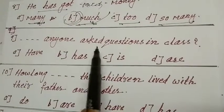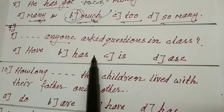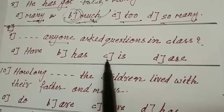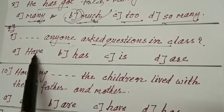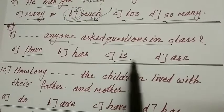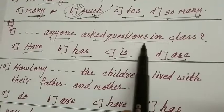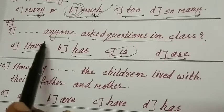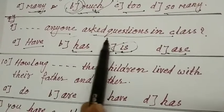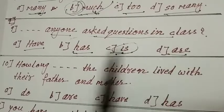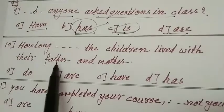Ninth one. Anyone asked questions in class. Anyone in present perfect tense. Has anyone asked questions in class? Here has is correct. Has, B is your answer.